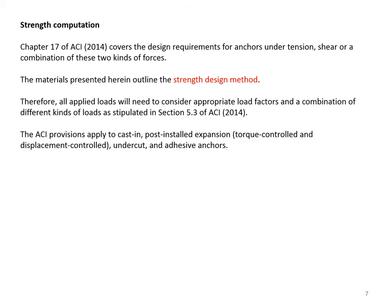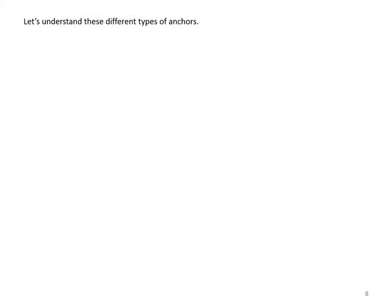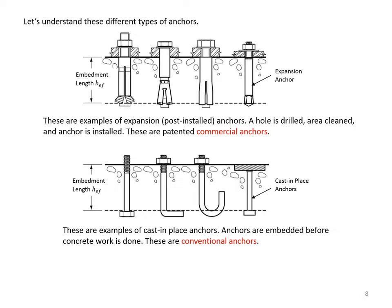The ACI provisions apply to cast-in, post-installed expansion such as torque-controlled and displacement-controlled, undercut, and adhesive anchors. The upper figure shows several commercial anchors — these are examples of expansion post-installed anchors. A hole is drilled, area cleaned, and anchor is installed. The lower figure shows a series of conventional anchors, either headed anchors or hooked anchors. The embedment length HEF is shown in both types.